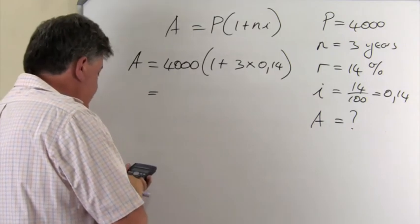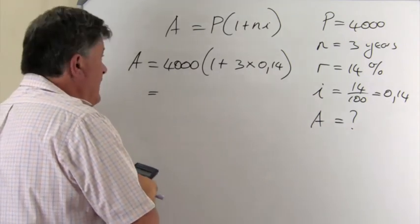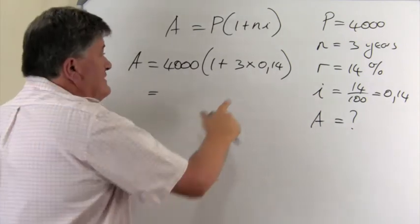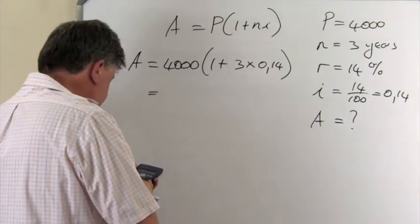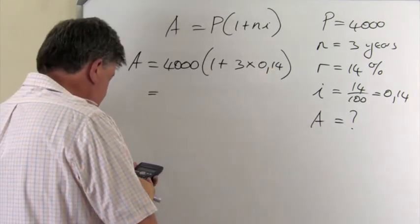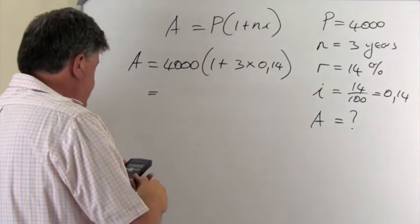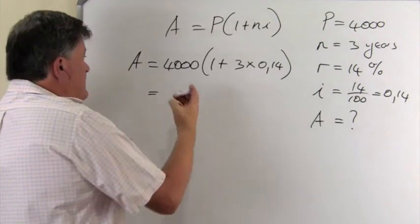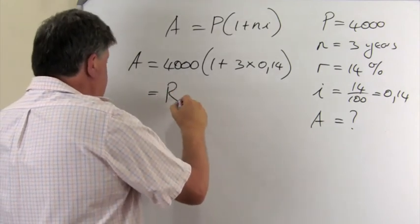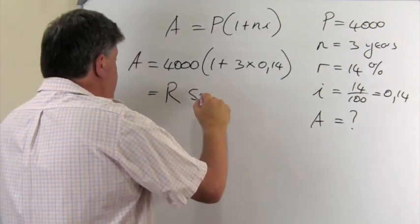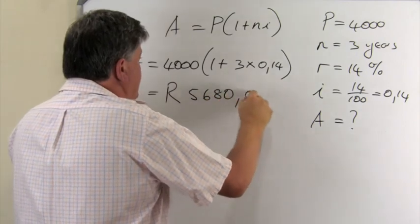So you use the 4,000 Rand. You times by one plus, you do the multiplication, three times 0.14. And remember to close your bracket. Equal to. And my answer is then 5,680 Rand.